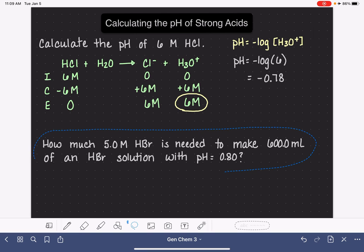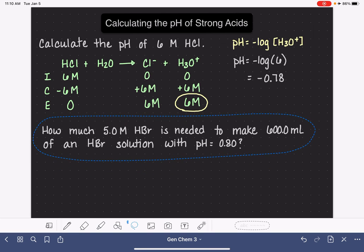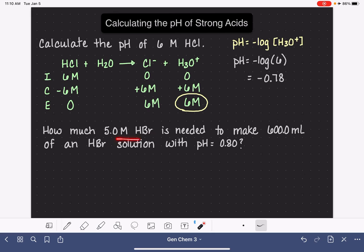Let's look at our second example. This problem is a little bit different. How much of a 5 molar HBr solution do we need to make 600 milliliters of an HBr solution that has a pH of 0.80? So this is basically a dilution type question. We're starting with 5 molar HBr, we don't know how much we need, we do know that we want to end up with 600 milliliters, and we want the pH to be 0.8.